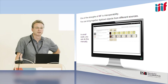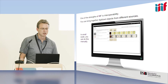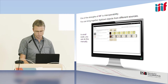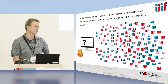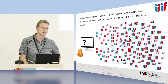The strength of IIIF is interoperability, and here you can bring together digitized objects from different sources. In small scale, you can do this manually — we've seen a lot of examples before. But what do you do if there are millions of IIIF objects from hundreds, or thousands maybe, of institutions out there? How can you find and select objects within this mass?